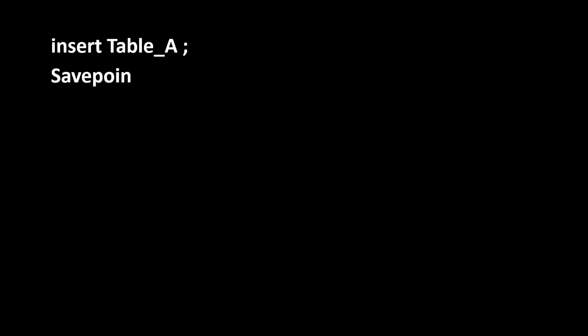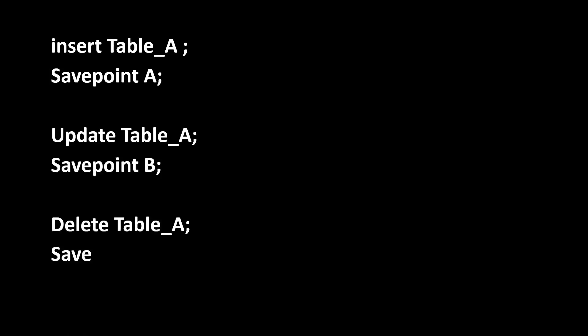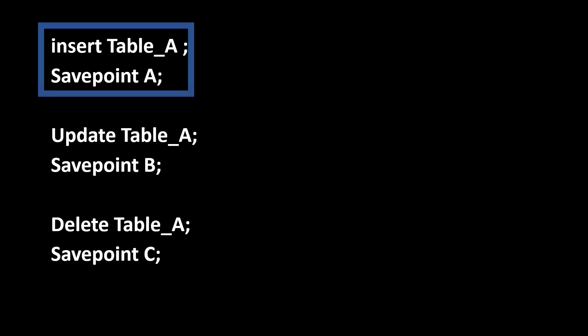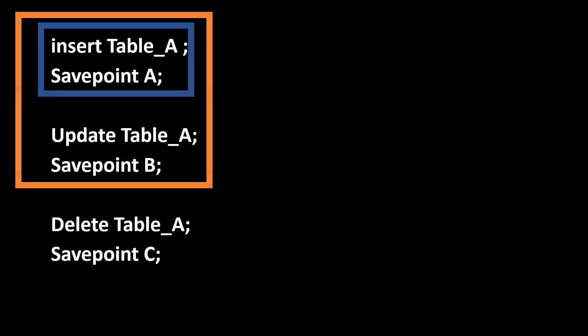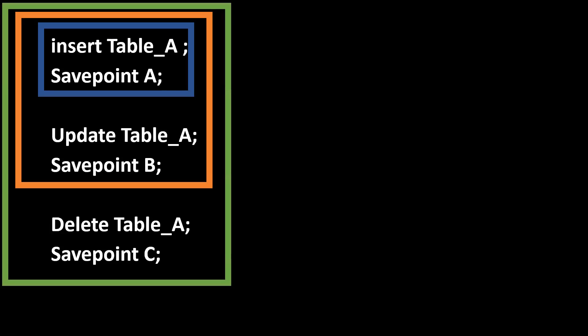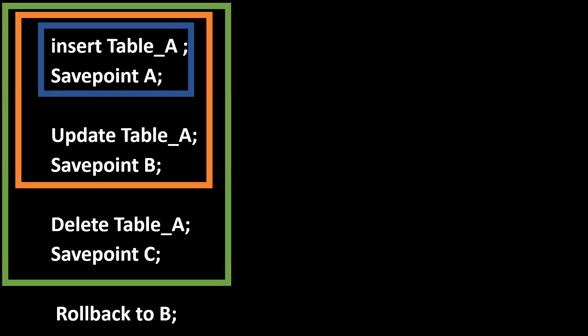A simple example to understand savepoint: insert into a table, then set savepoint A; update the table, set savepoint B; then a third statement with savepoint C — this is one transaction. If you rollback to savepoint B, it will remove the last statement (the delete), leaving only the insert and update statements available. You can then commit those two operations or rollback entirely, so the changes are not reflected in the database at all.